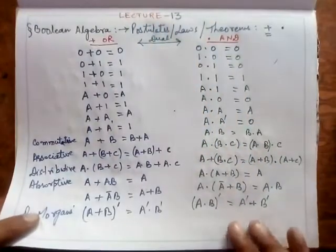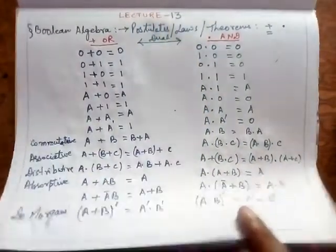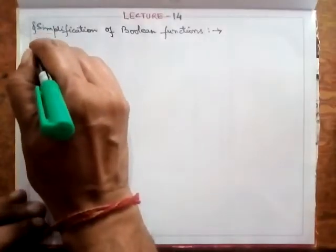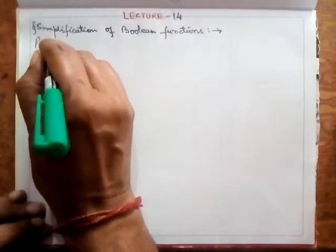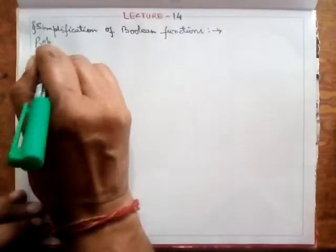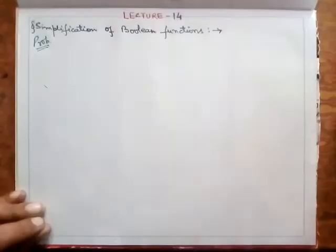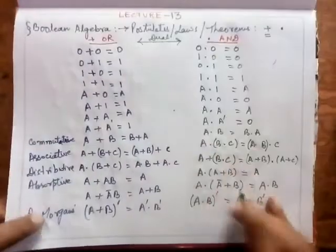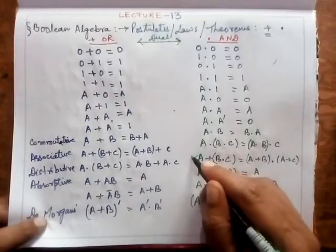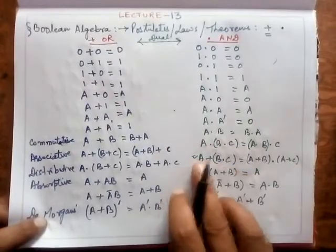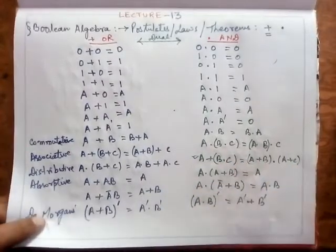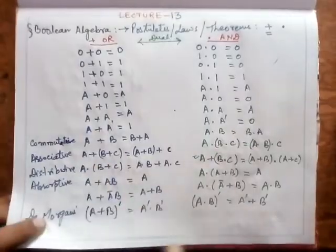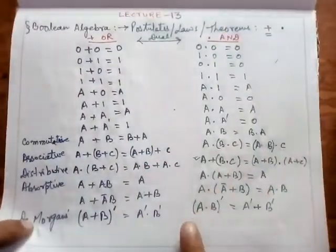Let's take a problem first. Suppose I want to prove this theorem: prove that a plus b·c is equal to (a plus b)·(a plus c). This is the distributive law for the AND operation.